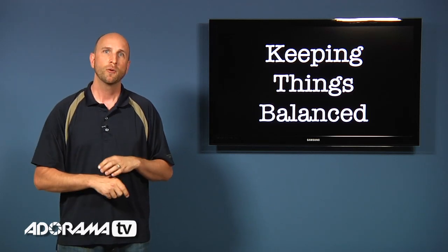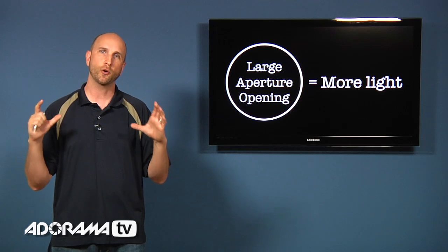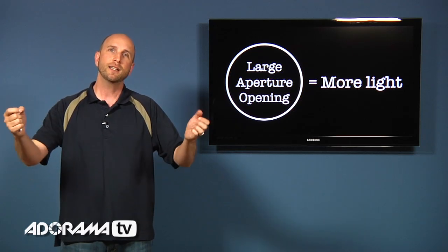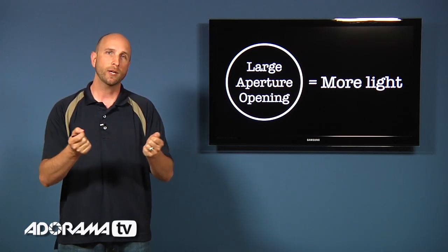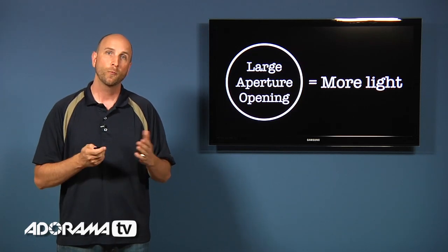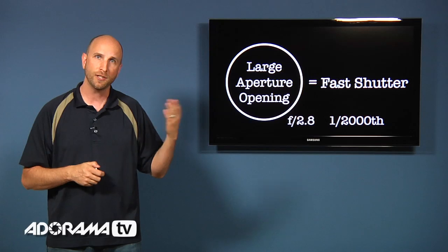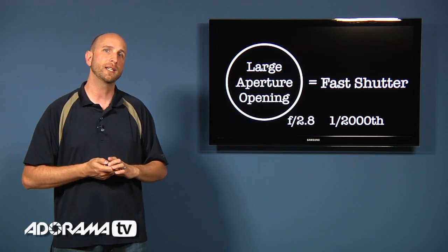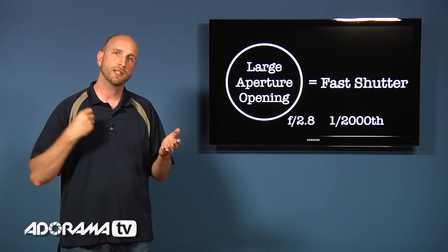So we get a proper exposure. Well let's say that we have a really wide open aperture. Well that's going to let through a lot of light. And we have a lot of light coming through our lens. We need to balance that somehow. Well we can use a really fast shutter speed. And that fast shutter speed is going to balance out how much light is coming through.